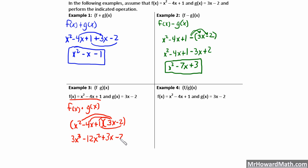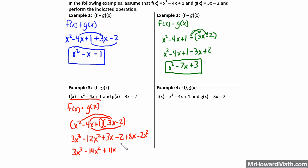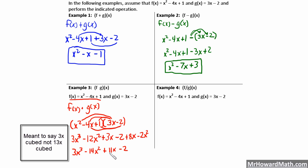Negative 2 times 1 is negative 2. Negative 2 times negative 4x gives us plus 8x. Negative 2 times x squared gives us minus 2x squared. Combining like terms: one cubed term — 3x cubed. Minus 12x squared minus 2x squared is negative 14x squared. 3x and 8x are both positive, so plus 11x. The only constant is negative 2. Final answer: 3x cubed minus 14x squared plus 11x minus 2.